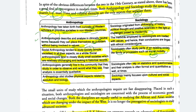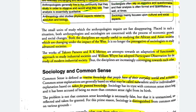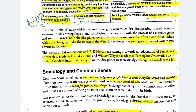In sociology, one school of thought may support something, but because the sociologist is studying the current society of which he is also a part, it becomes value-loaded research. Anthropologists generally live in the community they study in order to observe and record what they see, while sociologists use questionnaires, statistics, etc. Anthropology also studies physical aspects related to evolution and biology, with an archaeological component, while sociology studies strictly cultural and social aspects.